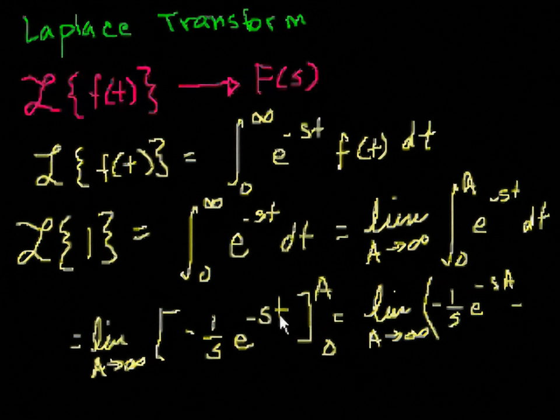Now what happens when I put t equals 0 in here? So when t equals 0, it becomes e to the minus s times 0. This whole thing becomes 1. And I'm just left with minus 1 over s. So I had minus 1 over s. Fair enough.